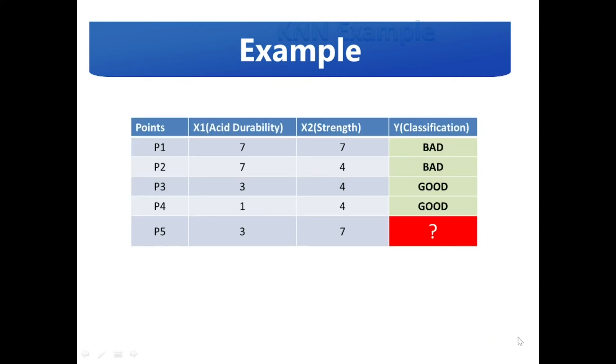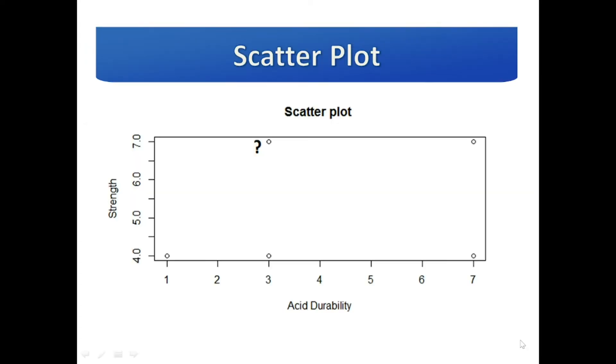Now we need to predict the value of y for a given new value of x1 and x2 with point P5 (3, 7). All these points have been mapped in a scatter plot. Now we need to identify the value in question.